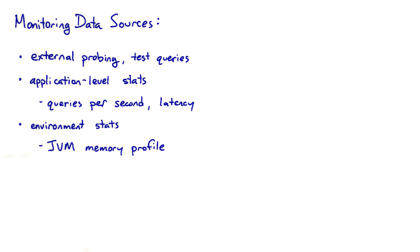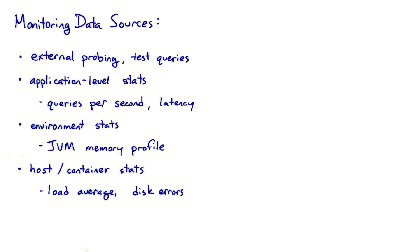Another thing to monitor are stats exported by our runtime environment — for instance, the memory profile in a Java JVM. There's also information about the computers we're actually running on, such as the load average or the number of disk errors. You can often discover that a disk is about to fail by monitoring the number of errors it's having. Other sources of monitoring data can include log analysis, query profiling such as Google App Engine's App Stats, and external analytic services.